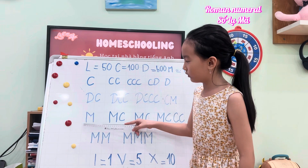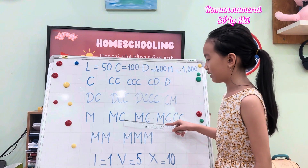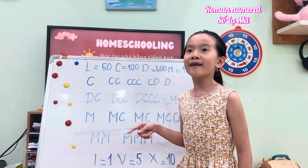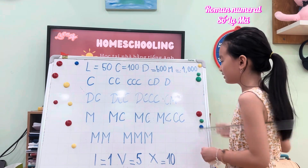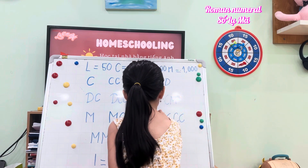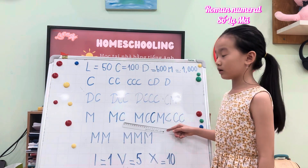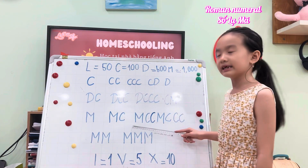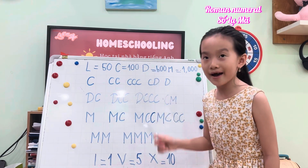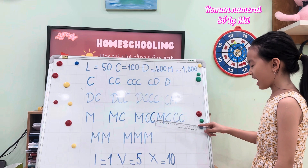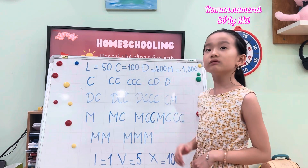M would equal 1,000. So MC would be 1,100. And MCC equals 1,200. And MCCC would equal 1,300.